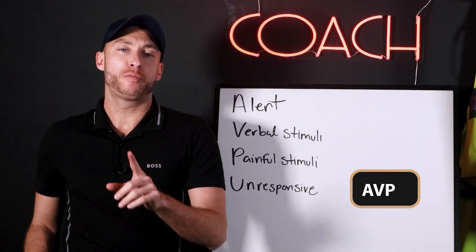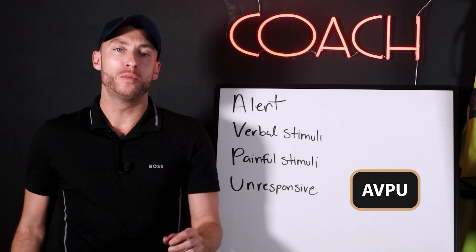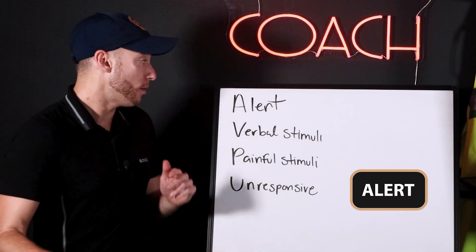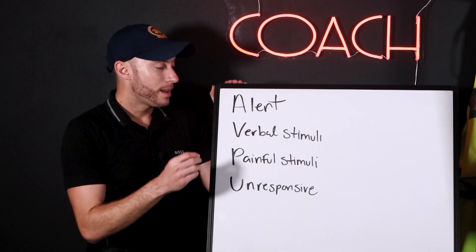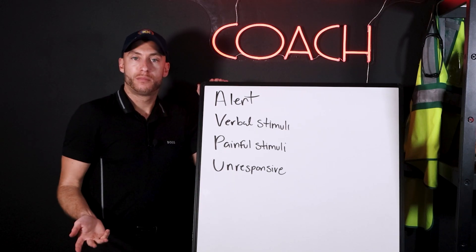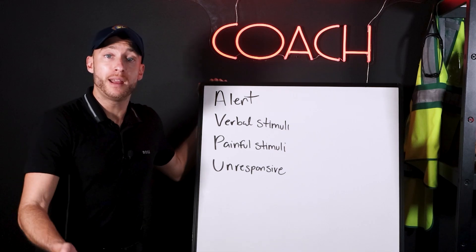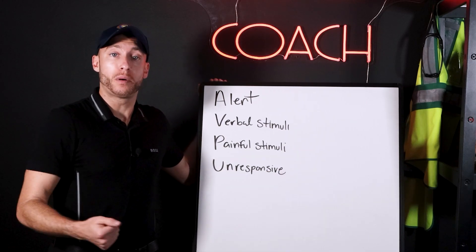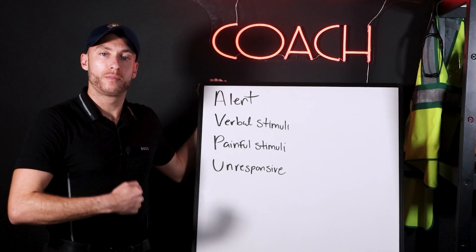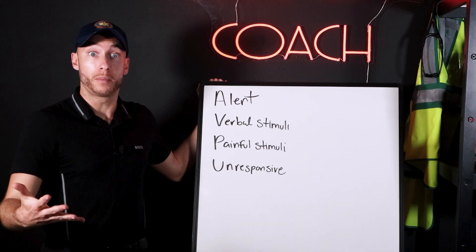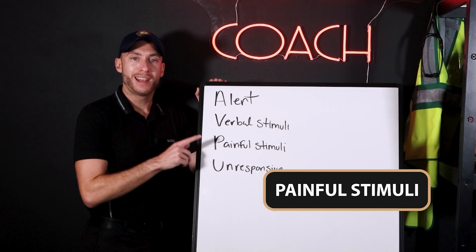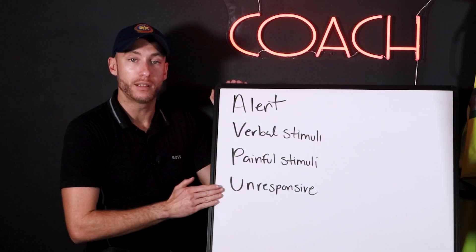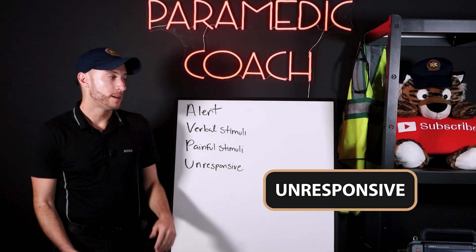The mnemonic you'll hear is AVPU — A-V-P-U — which helps us determine how responsive the patient is. A patient like me right now is alert, talking — alert and oriented. But what if you approached a patient and they didn't respond initially, but opened their eyes when you said their name? That's a verbal stimulus. If they only respond to a sternal rub, that's a response to painful stimuli. If there's no response to verbal or painful stimuli, the patient is unresponsive. This is the first step of vital signs: check responsiveness.